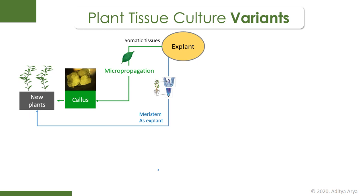In another strategy, instead of using somatic tissues, we can use a specific type of tissue called meristem. Meristem is present in the apical parts — apical shoot or apical root — and it already has undifferentiated cells which can directly be cultured and converted into new plants. We do not need to turn a somatic tissue into callus first. This strategy is defined as meristem culture.